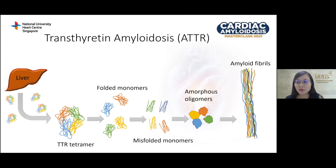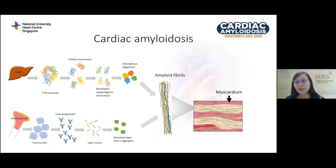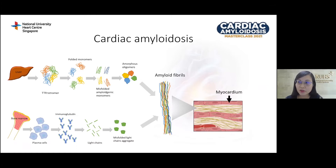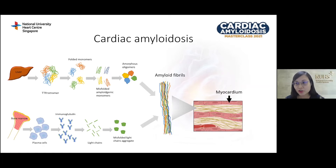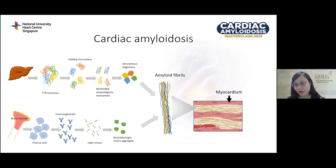Despite previously being known as the senile type, wild-type ATTR can also be seen in patients less than 50 years old. In cardiac amyloidosis, regardless of whether it is AL or ATTR, amyloid fibrils deposit in the extracellular spaces surrounding the myocytes, causing thickening of the myocardium. The circulating oligomers and misfolded light chains are cytotoxic and can lead to direct cell death. In AL, amyloid deposition is usually subendocardial and diffuse, whereas in ATTR there can be patchy areas of transmural involvement, and a subset can lead to asymmetric septal hypertrophy, which can mimic hypertrophic cardiomyopathy.